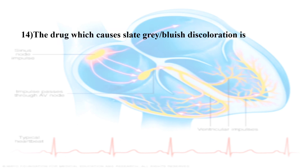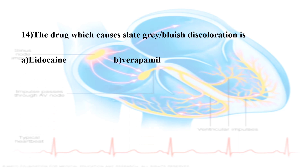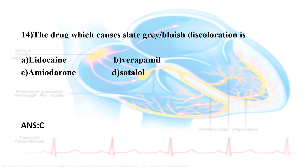Fourteenth question: The drug which causes slate grey-blue discoloration is? The options are: Option A, Lidocaine; Option B, Verapamil; Option C, Amiodarone; Option D, Sotalol. The correct answer is Amiodarone. Amiodarone causes slate grey-blue skin discoloration along with other side effects including pulmonary fibrosis, corneal deposits, optic neuritis, hepatotoxicity, and thyroid abnormalities.